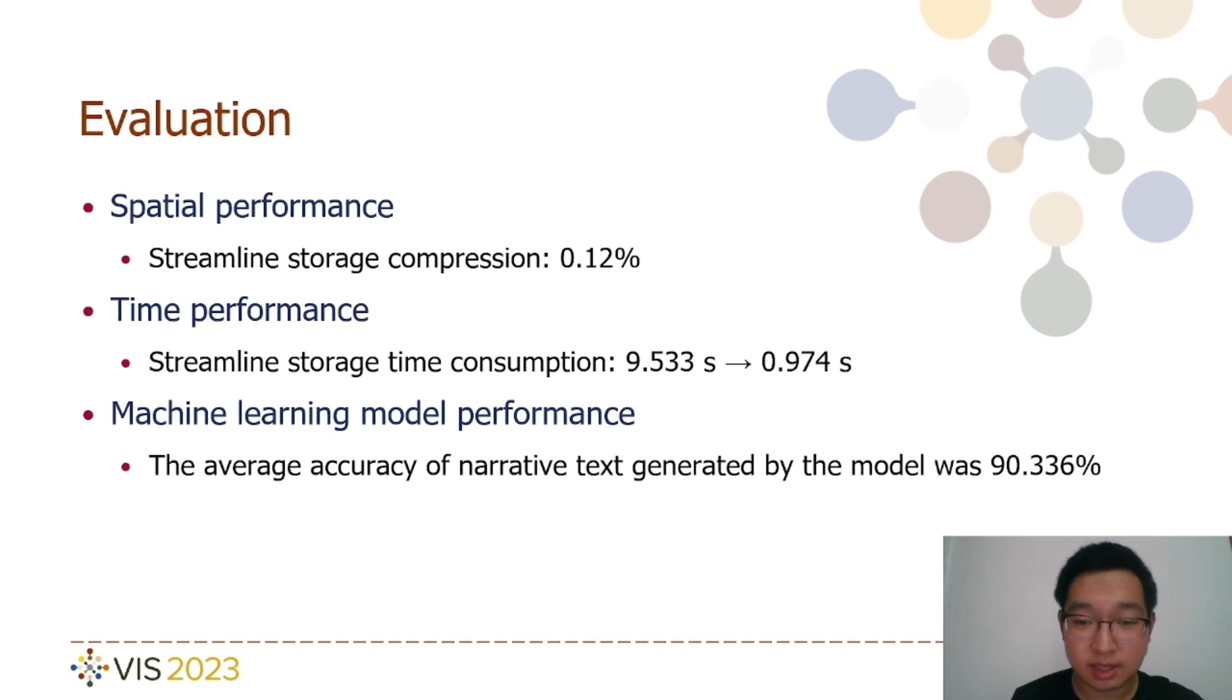Regarding time performance, the time needed to save the corresponding image is 0.974 seconds, while storing the corresponding streamline file takes significantly longer at 9.533 seconds. Considering the generation of narrative text, we trained a total of 8 RNN models with varying layers to meet different text output requirements. On average, the accuracy rate of text generated by these models was 90.336 percent.